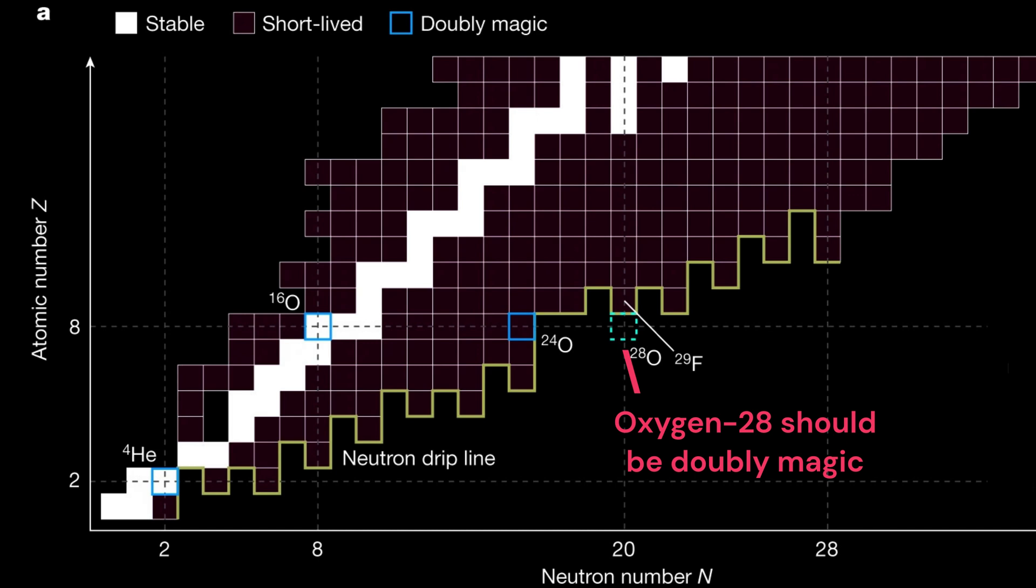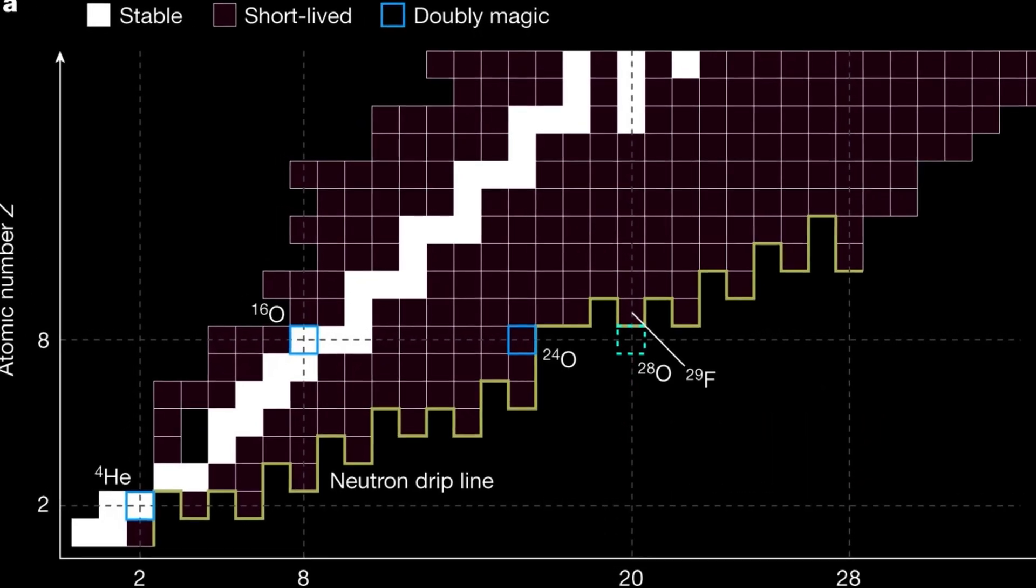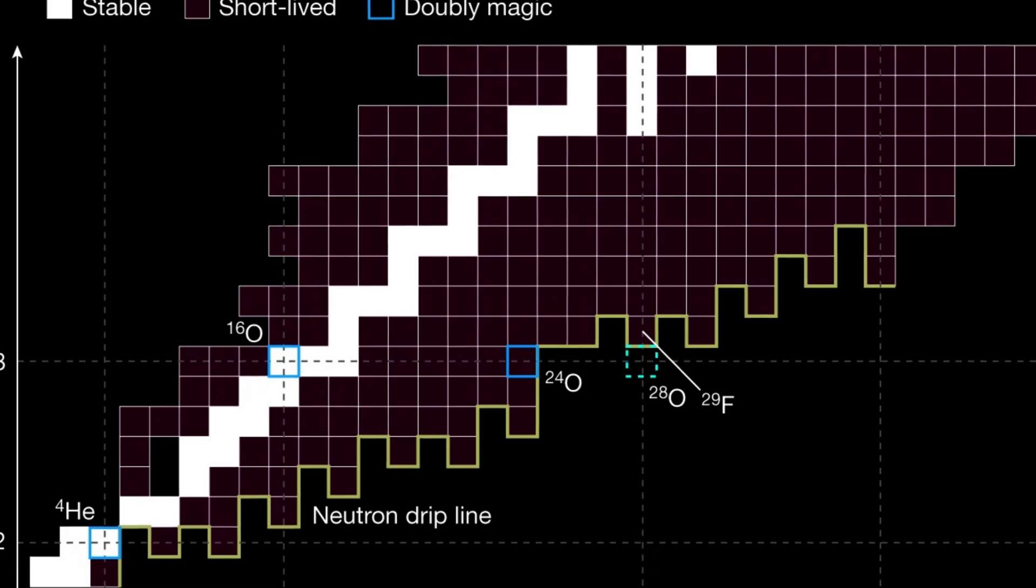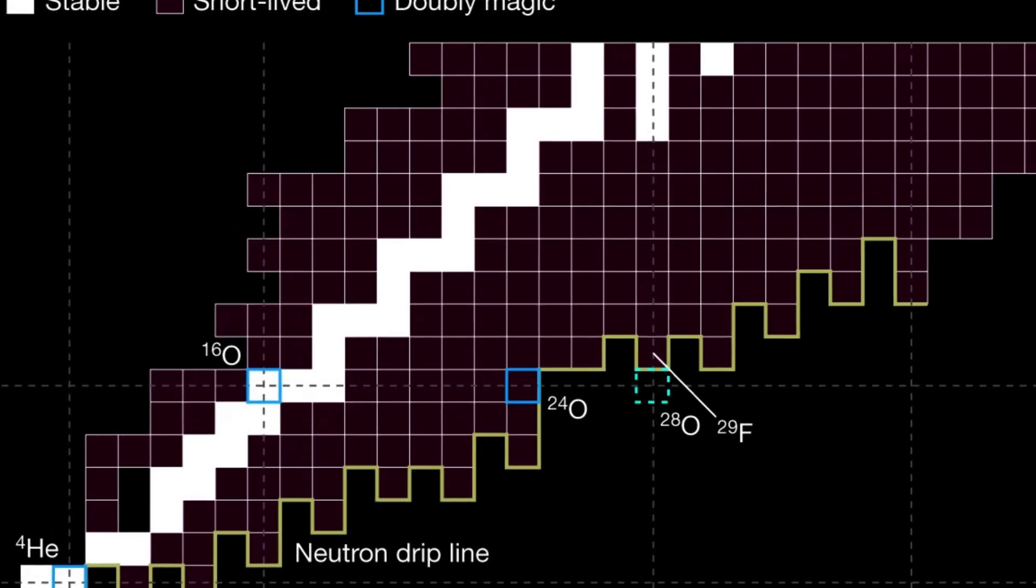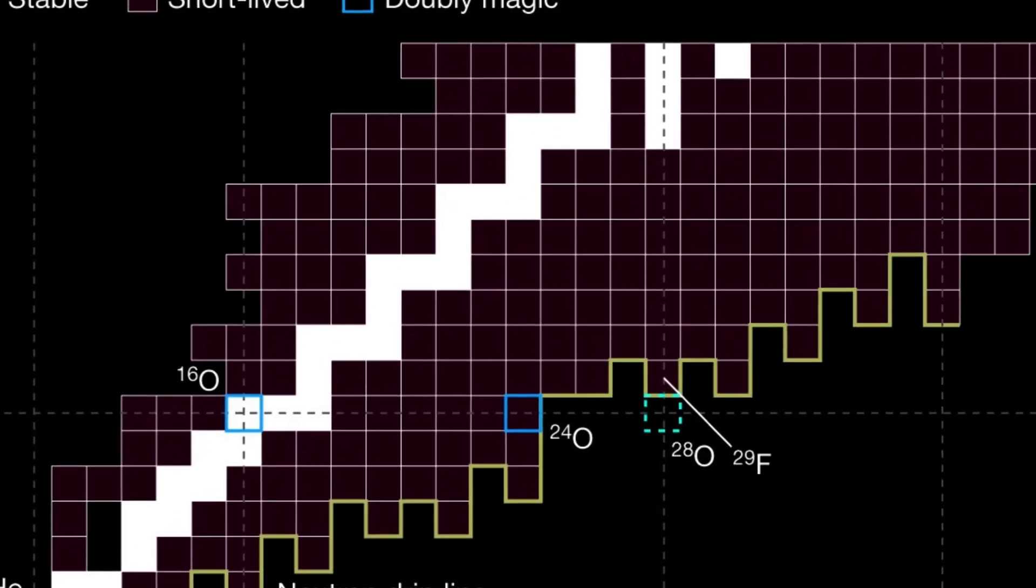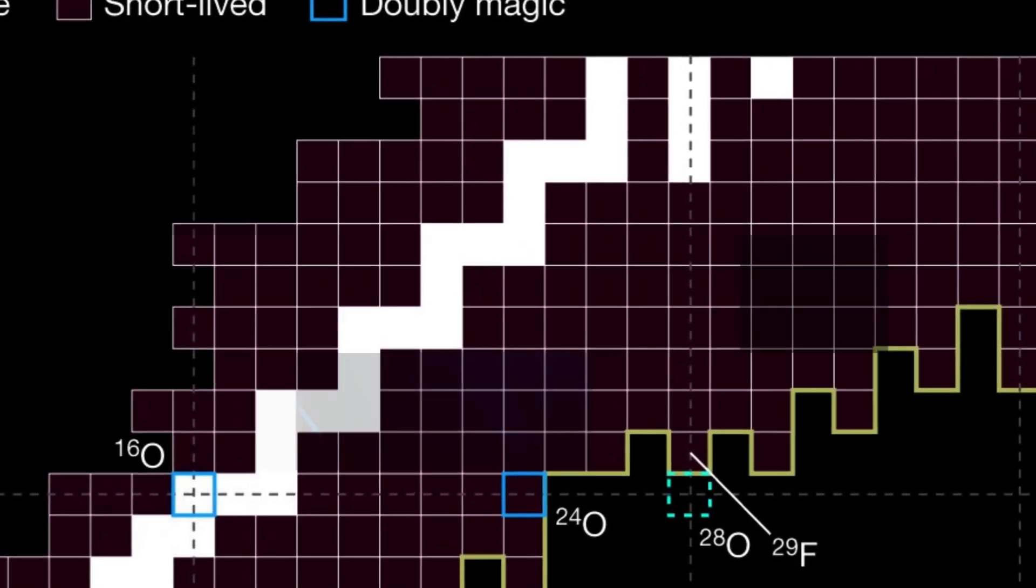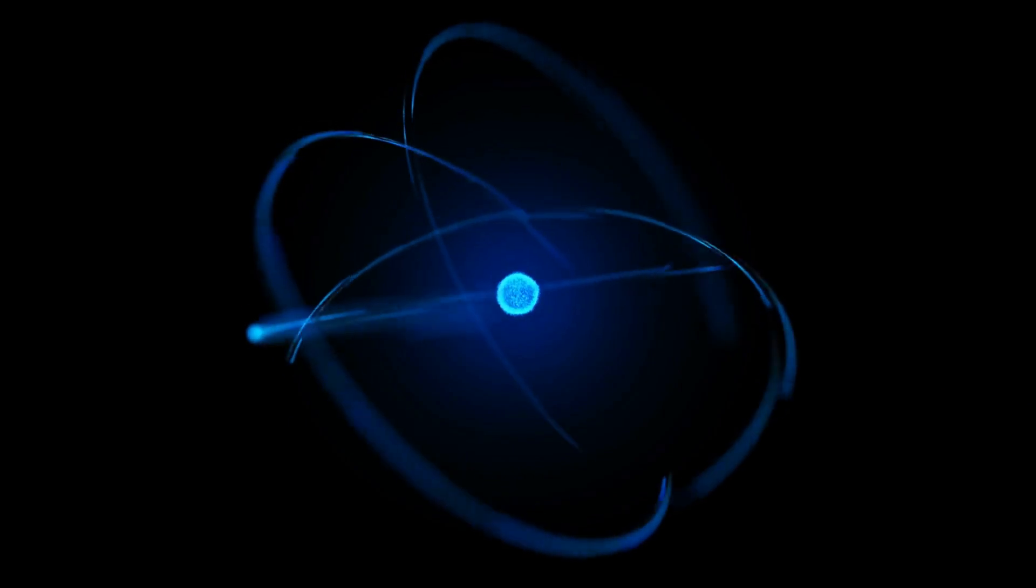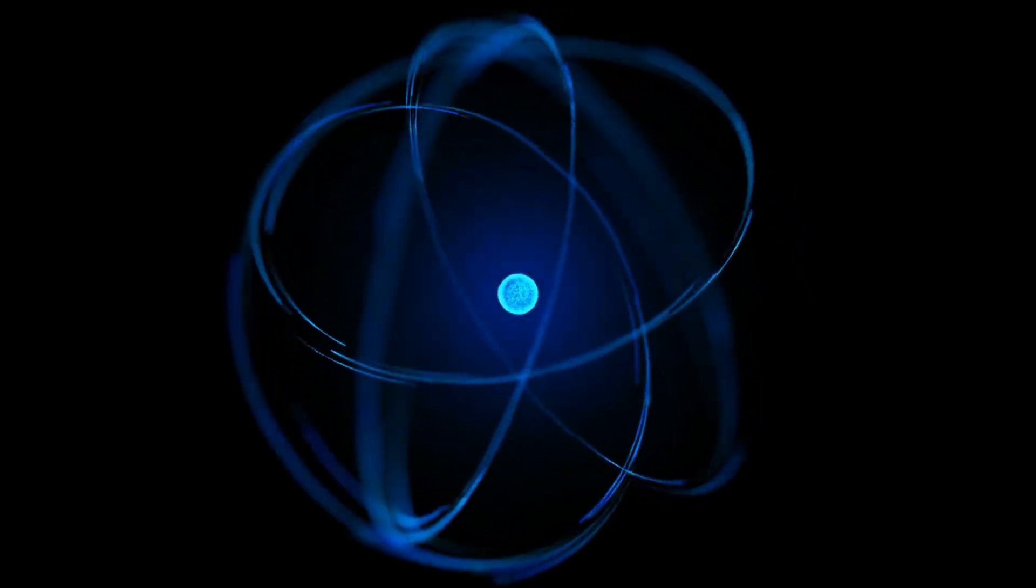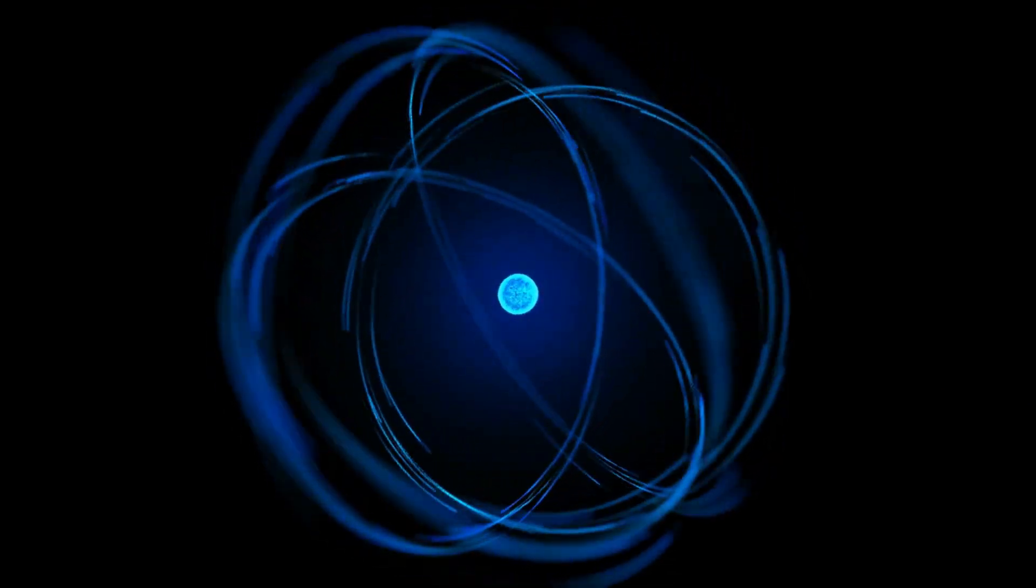It has 12 extra neutrons, making it a heavyweight champion in the universe of isotopes. The existence of such an isotope poses a tantalizing question. How does the nuclear force, the glue that holds protons and neutrons together in an atomic nucleus, cope with such an excess baggage of neutrons? Does it follow the same rules we've come to know, or does it dance to a different tune when dealing with Oxygen-28?